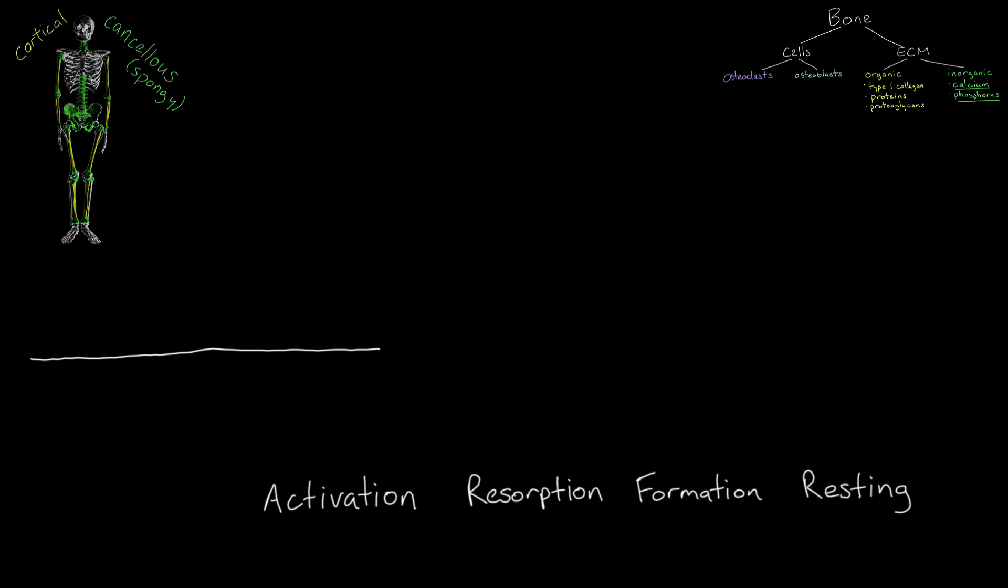The quiescent bone surface is covered with bone lining cells. Osteoclasts, derived from hematopoietic precursor cells in the granulocyte macrophage lineage, are the only cells capable of breaking down mineralized bone, and they require two hits for activation.